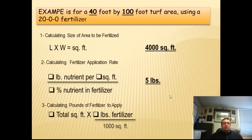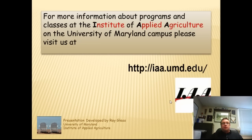Then we moved to the third step, where we took the total square footage, multiplied by five pounds, and then divided by 1,000. We came up with 20 pounds. That's how many pounds you need for the total area of the turf area we're talking about—4,000 square feet. You're going to apply 20 pounds for that area.